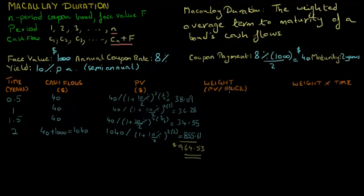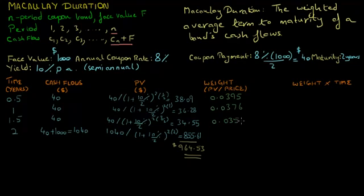Now let's calculate the weight of each cash flow, which is the present value of each cash flow divided by the current price of the bond. The weight of the first cash flow is $38.09 divided by $964.53, which equals 0.0395. Similarly, the weight of the second cash flow is 0.0376, the weight of the third cash flow is 0.0358, and the weight of the final cash flow is 0.8871. These weights must sum up to 1.